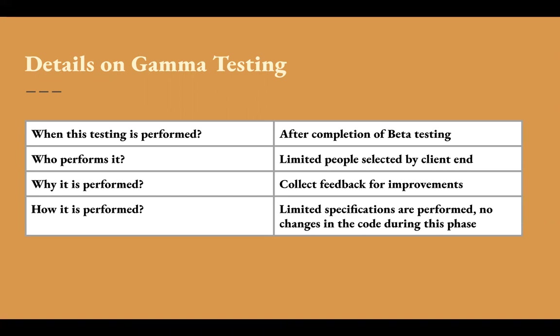During gamma testing, changes or updates in the code are not allowed. Only the feedbacks are collected for future updates. But in case any bug is detected which is either critical or of the highest priority, only then can changes be made in the code. Otherwise, the code changes are avoided.